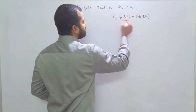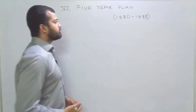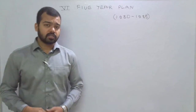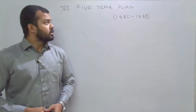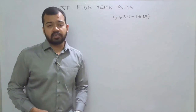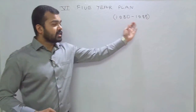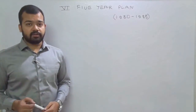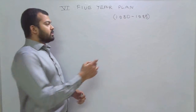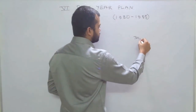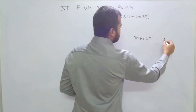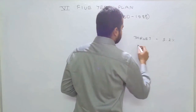In the last video on the 5th Five Year Plan, we discussed about the discontinuation of the 5th Five Year Plan. So the 6th Five Year Plan started with the year 1980, covering the period 1980 to 1985. Now we will write the target growth rate, which was 5.2% for this Five Year Plan.